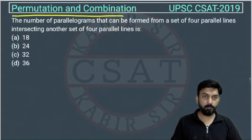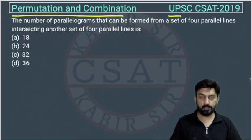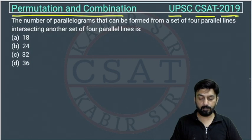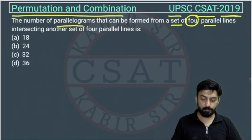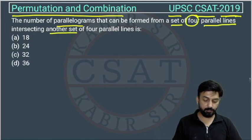This is a question of permutation and combination asked by UPSC in the CSAT paper of 2019. The number of parallelograms that can be formed from a set of four parallel lines intersecting another set of four parallel lines.